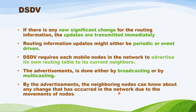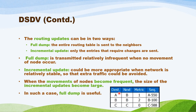DSDV requires each mobile node in the network to advertise its own routing table to its current neighbors. Whenever an update occurs for one particular node, that routing information will be transferred to nearby nodes. The advertisement is done either by broadcasting or by multicasting. The routing table can be updated in two ways: one is full dump, and another one is incremental update. Full dump means the entire routing table is sent to the nearby node. Incremental update means only the entries that require changes are sent.